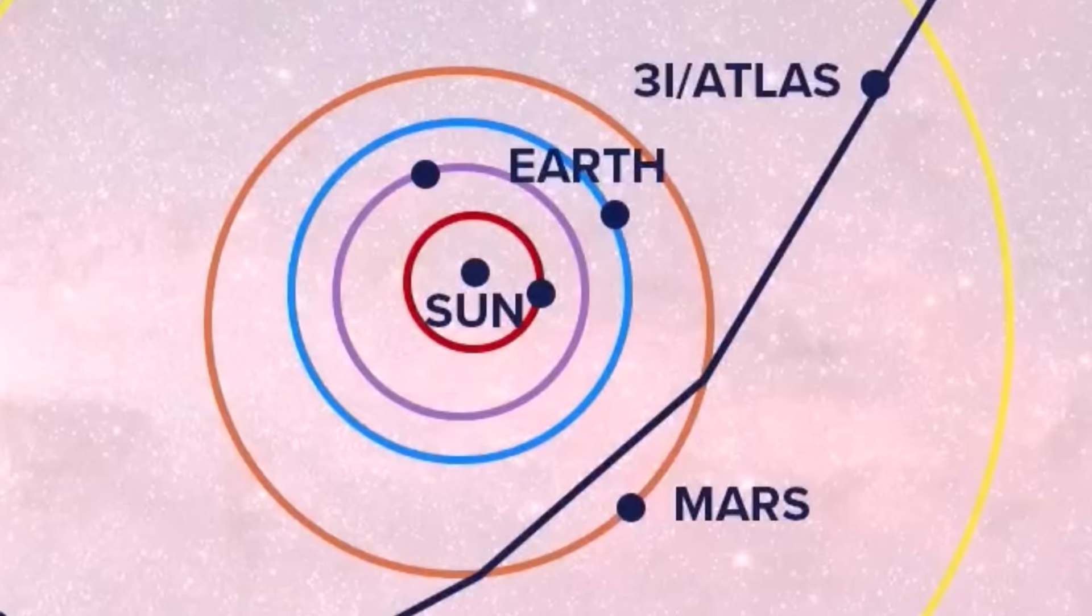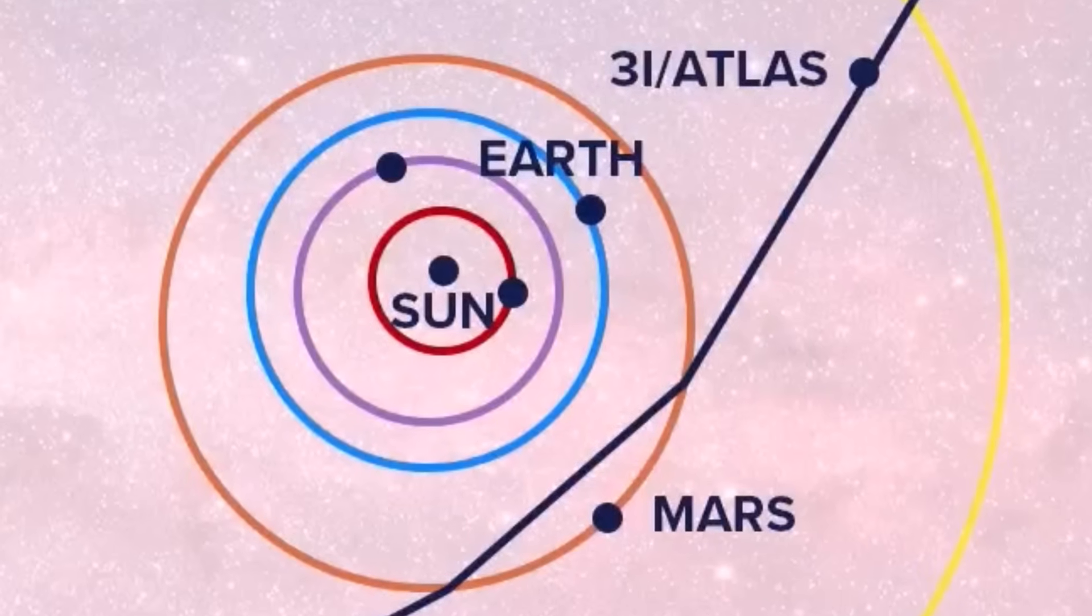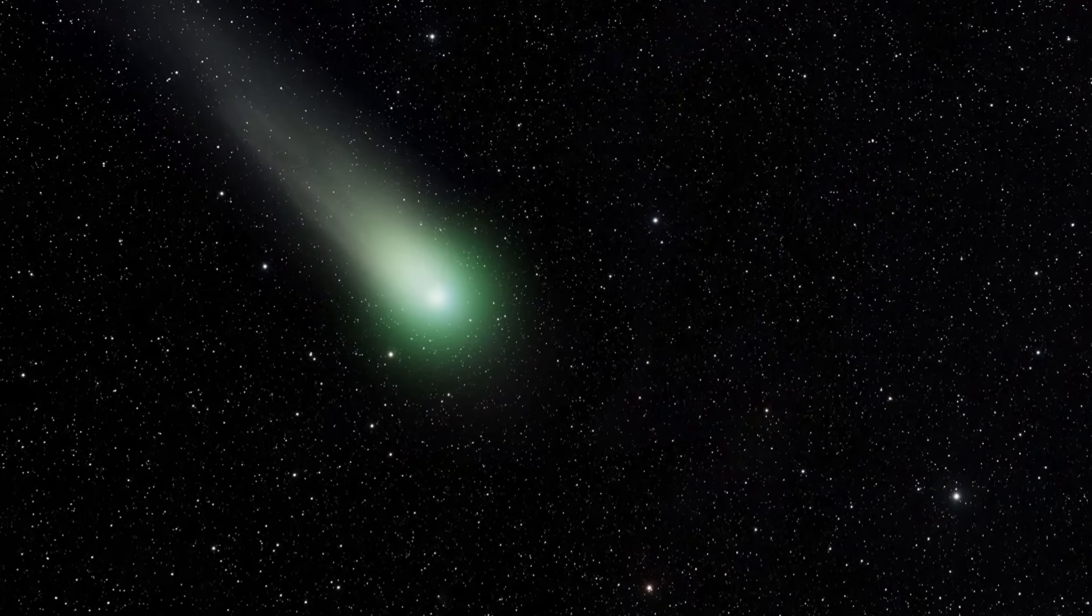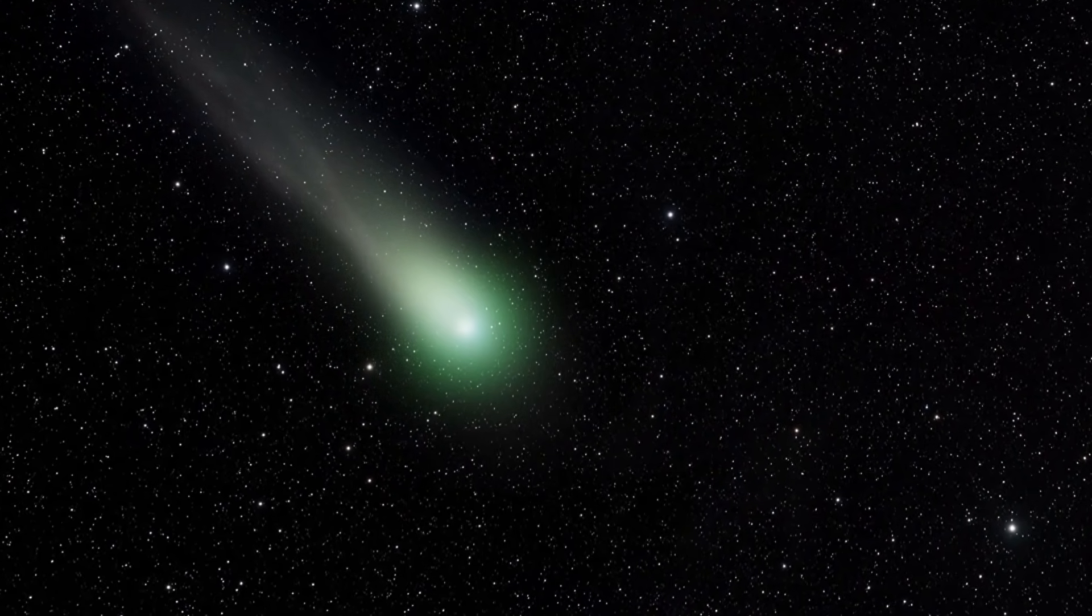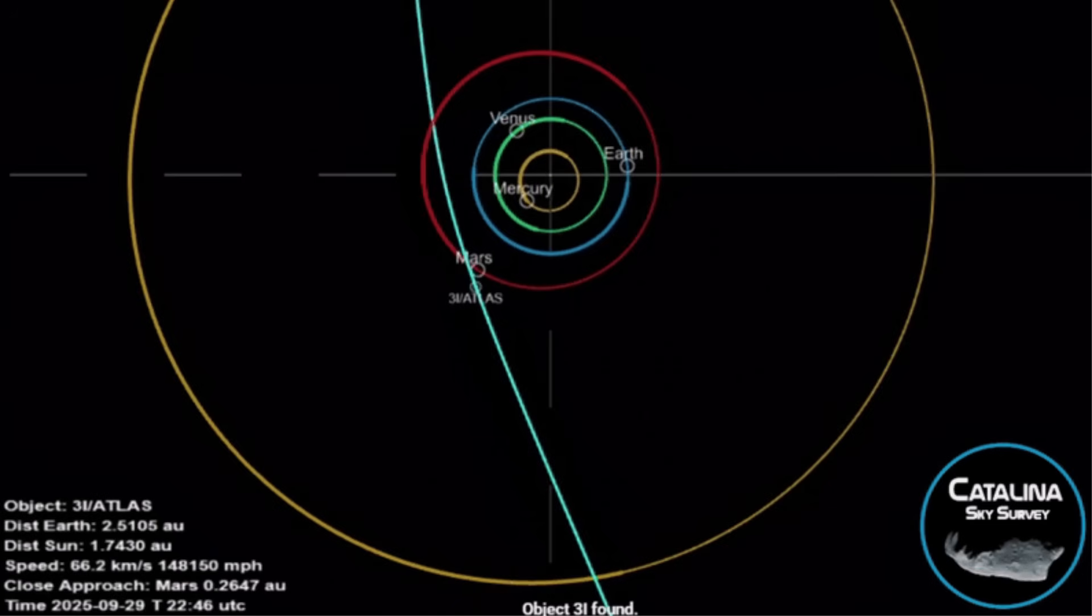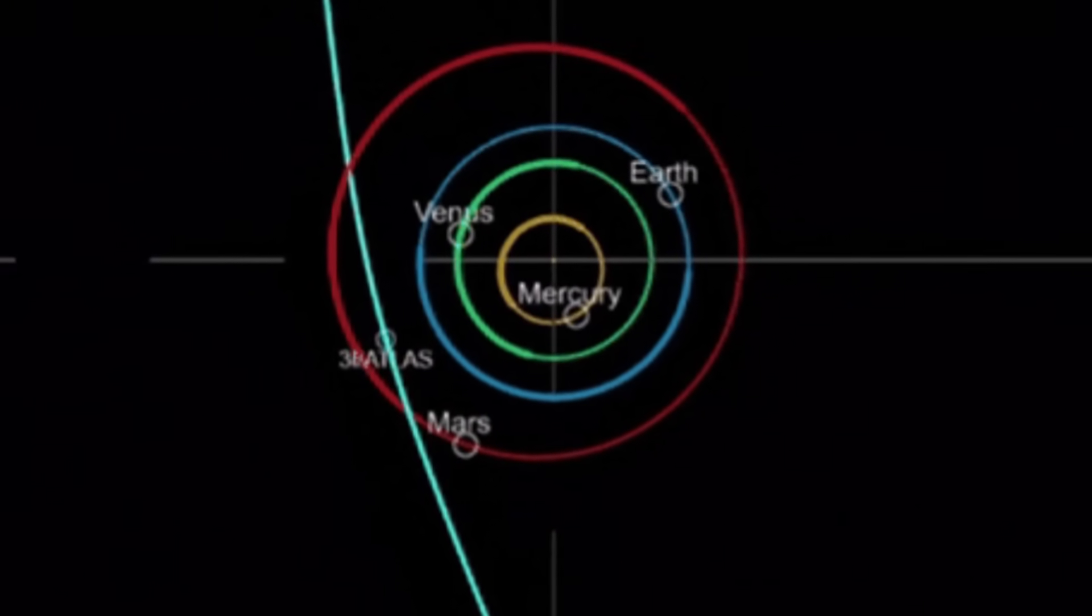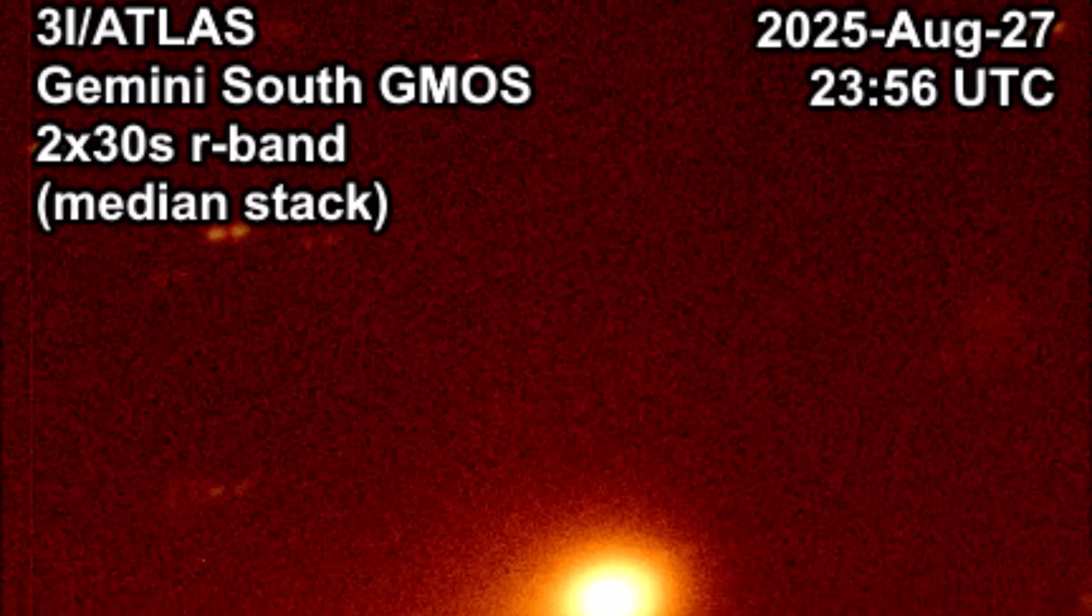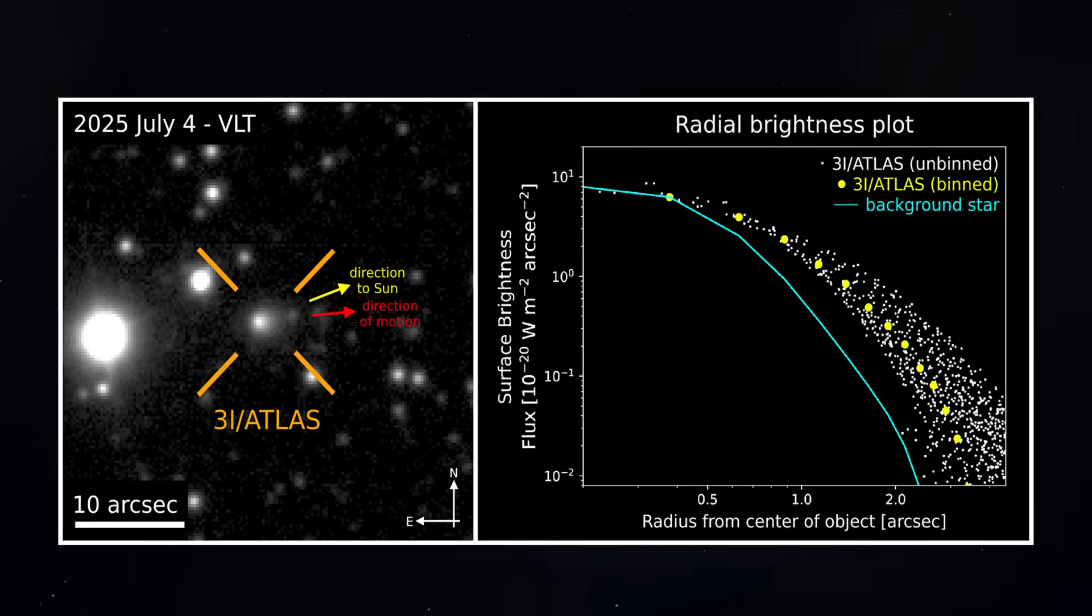On October 29, it will reach Perihelion, the tightest point in its blistering journey around our star. But that's not the strangest part. In fact, on that exact day, Three-Eye Atlas will perform a celestial magic trick. It will align perfectly with the Earth and the sun. For a brief, critical moment, it will disappear from our view, hidden in the blinding glare of our own star, a cosmic coincidence, or a perfectly calculated maneuver.